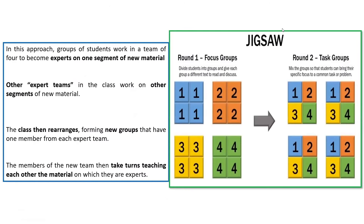One example of cooperative learning which is quite famous is the jigsaw technique. In this approach, groups of students work together in teams of four, and each team becomes an expert on one segment of the topic to be covered. As you can see in the jigsaw diagram, on the left side there are four groups of students. Students in group one will work on one piece of knowledge, and similarly students in groups two, three, and four will work on their own distinct pieces of knowledge and will master that knowledge, of course, with their teacher's support.